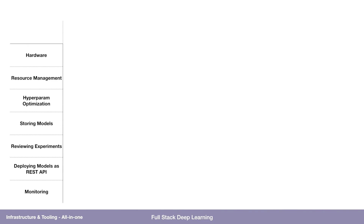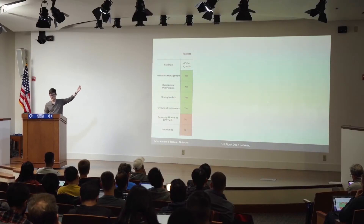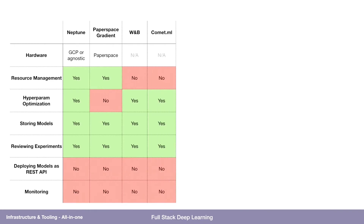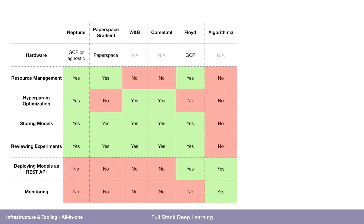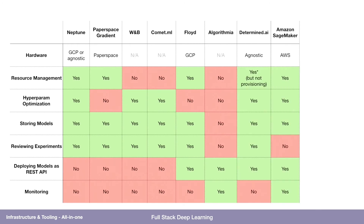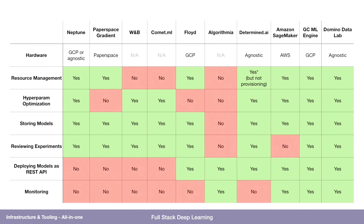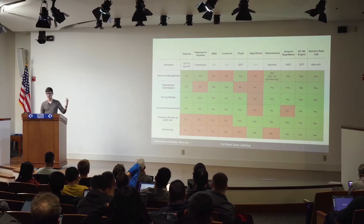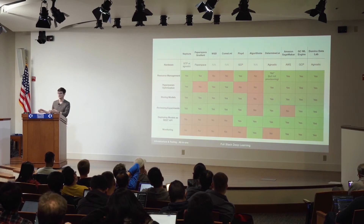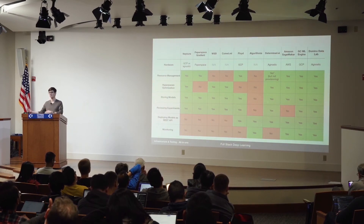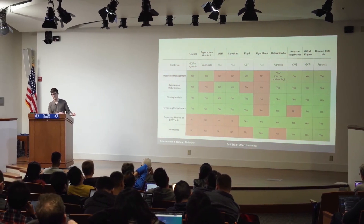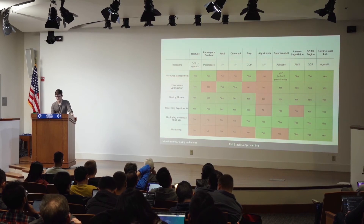I made a comparison table covering hardware, resource management, hyperparameter optimization, storing models, reviewing experiments, deploying models, and monitoring deployed models. Tools covered include Neptune, Paperspace Gradient, Weights & Biases, Comet ML, Floyd Hub, Determined AI, Amazon SageMaker, Google Cloud Machine Learning Engine, and Domino Data Lab. It's interesting to observe that a point solution often starts in one place and then expands to the whole stack. Some providers lock you to their hardware — SageMaker is AWS-only — while Domino Data Lab works on Amazon or Google Cloud, and Weights & Biases doesn't even provision hardware, so you can use it on-prem.